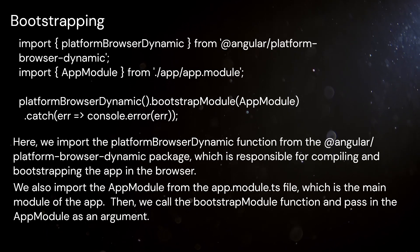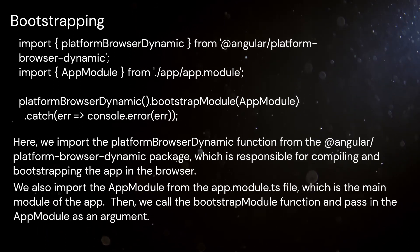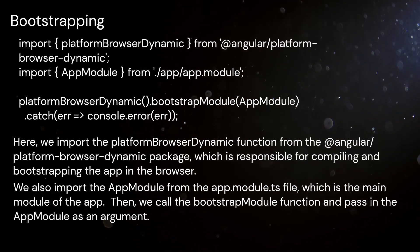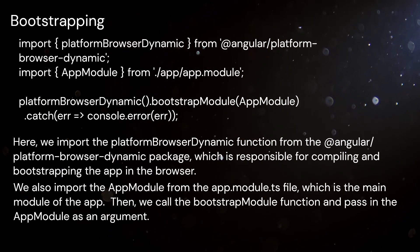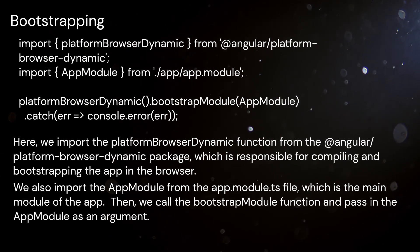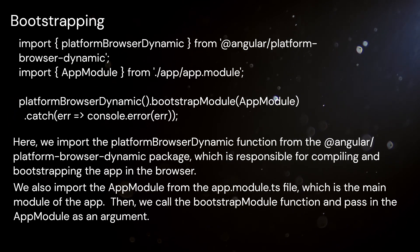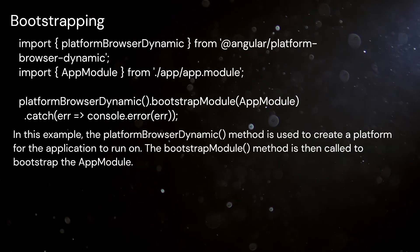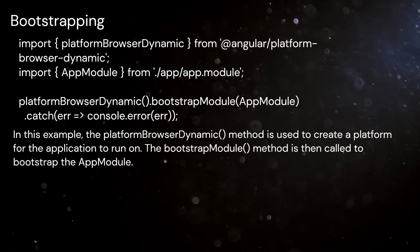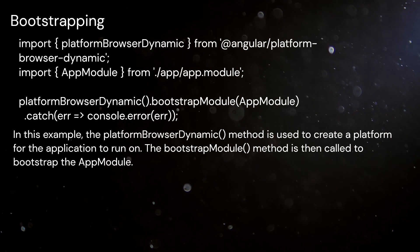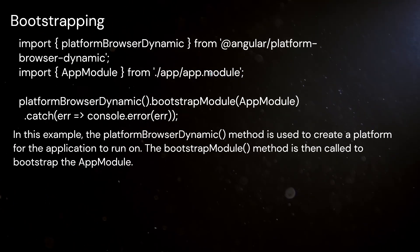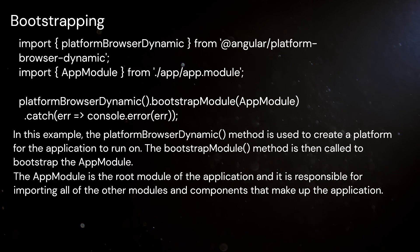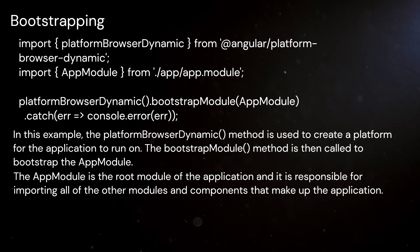We also import the app module from the app.module.ts file, which is the main module of the app. Then, we call the bootstrapModule function and pass in the app module as an argument. The platformBrowserDynamic method is used to create a platform for the application to run on. The bootstrapModule method is then called to bootstrap the app module.